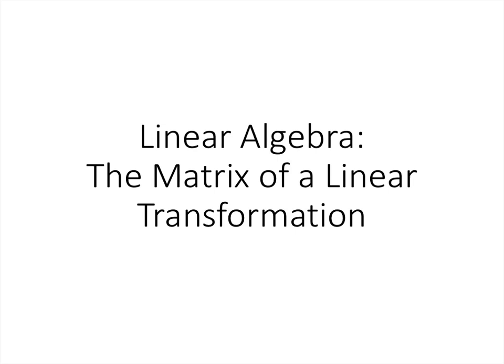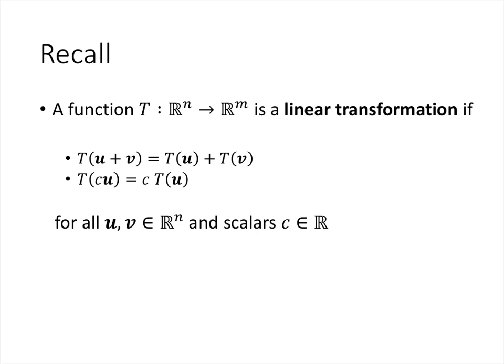In this lecture, we'll talk about the matrix of a linear transformation. A linear transformation is any function from R^n to R^m that satisfies two properties: T(u + v) = T(u) + T(v), and T(cu) = c·T(u), where c is a scalar and u is a vector. We know that any matrix transformation is a linear transformation, and in this lecture we'll learn that every linear transformation is a matrix transformation.